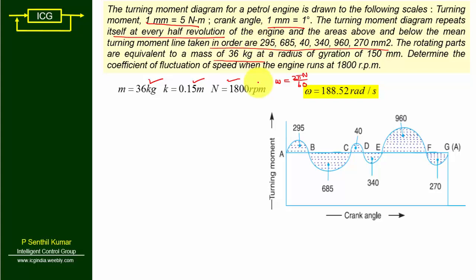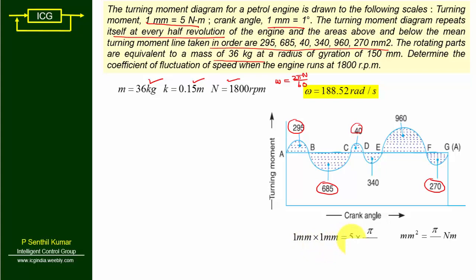Note the scale factor: on one side 1 mm × 1 mm, so 1 mm² on one side equals 5 Nm × 1 degree on the other. Converting degrees to radians: 5 × (π/180) = π/36 Nm. Therefore, 1 mm² = π/36 Newton-meter. This conversion will be used to compute the energy values.